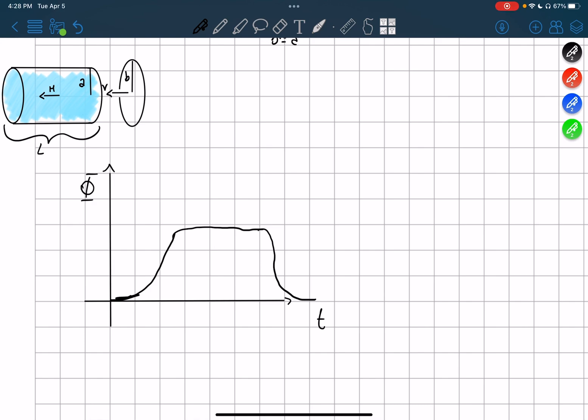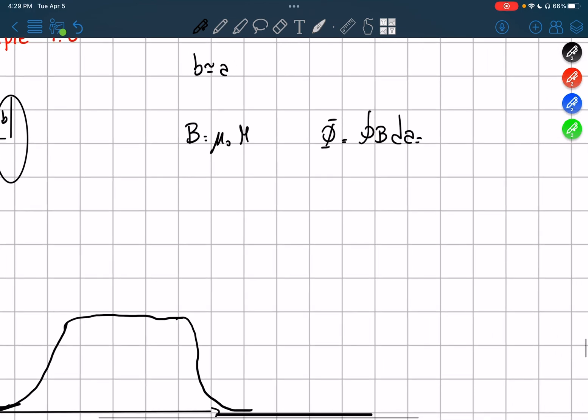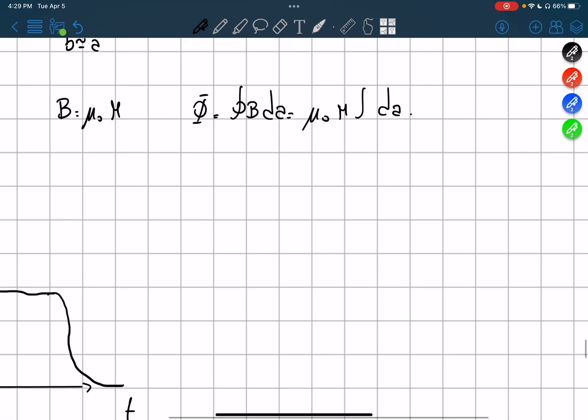Now, what is the flux? Well, the flux, actually, what is the magnetic field? B is equal to, since we have a magnetization, it's going to be equal to mu-naught magnetization times the magnetization. And we said that the flux is equal to the magnetic field times the area. And we said the area is about A, or B, which is equal to A. So it's going to be equal to mu-naught times M times pi times A squared.